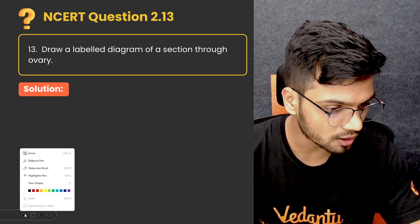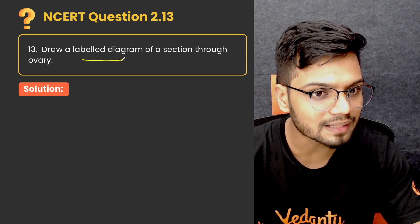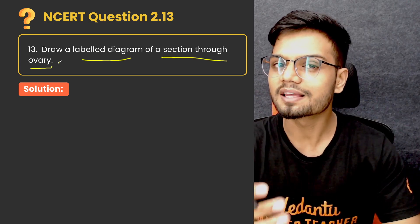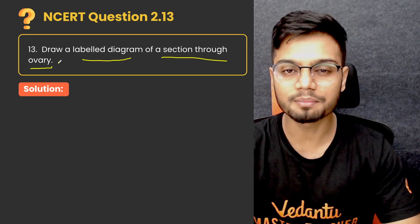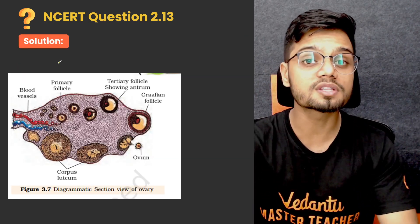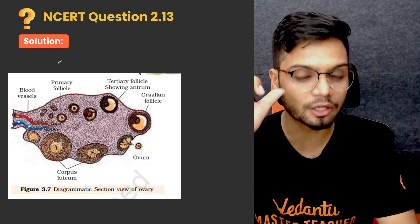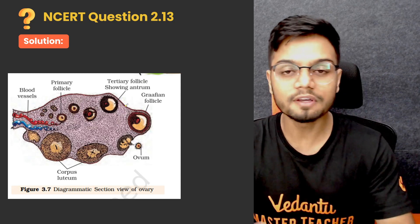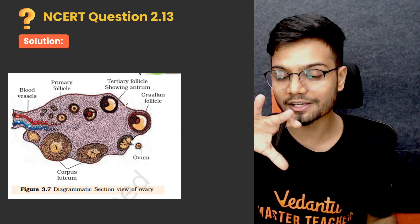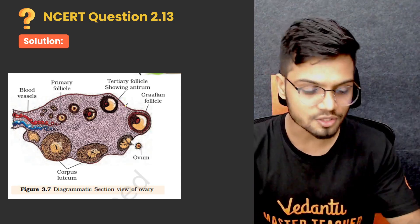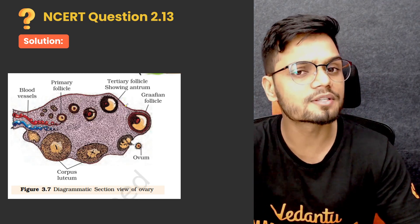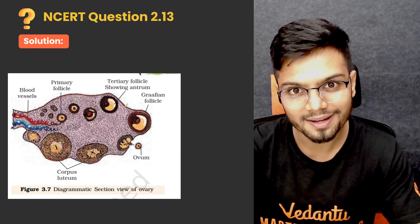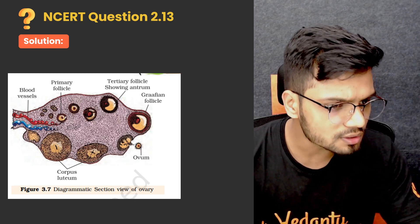The question says: draw a labeled diagram of a section through the ovary. For convenience, I have a diagram of the ovary here which is given in your NCERT — let's decode it. If you look at the structure of the ovary, we know the ovary is present on the left as well as the right. This is a section of any one of them — let's assume this is a section of the ovary present towards your right side.